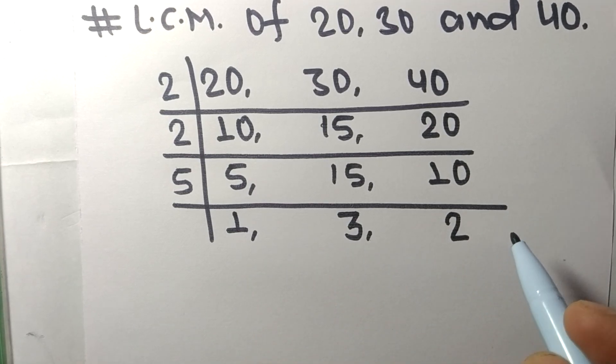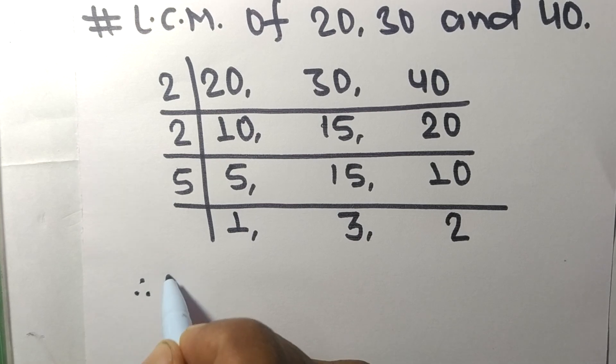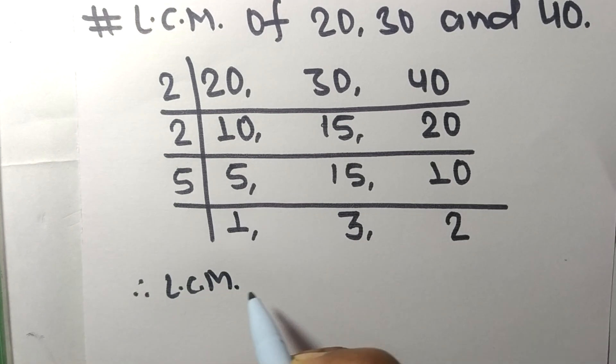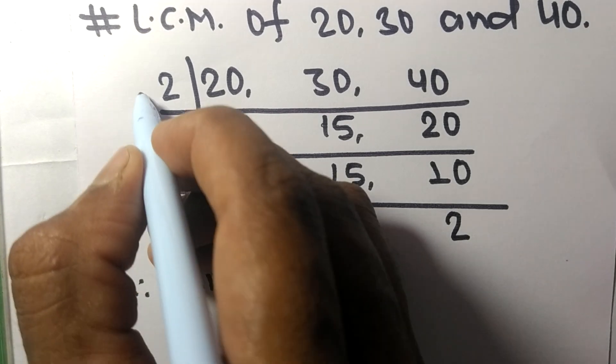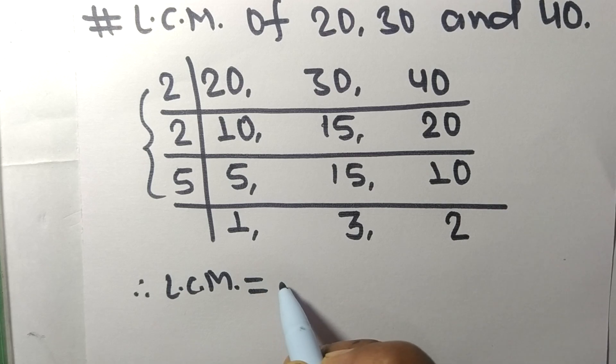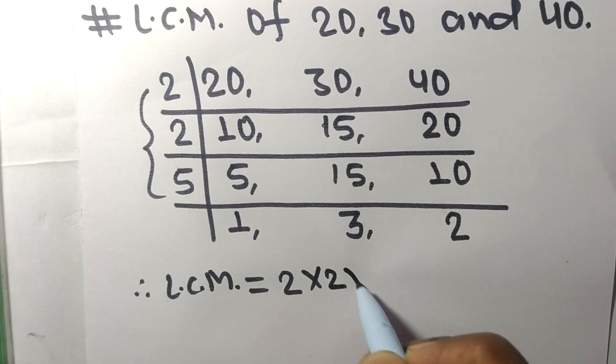And from this side we choose the numbers greater than 1, that is 3 and 2, so multiply by 3 and 2.